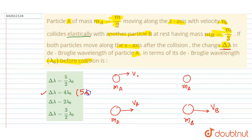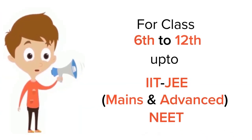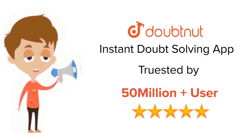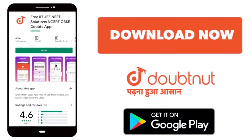5λ₀ minus λ₀. B is the correct one. Thank you. For class 6-12, IIT-JEE and NEET level, trusted by more than 5 crore students. Download Doubtnet today.